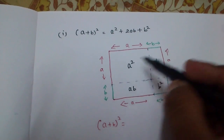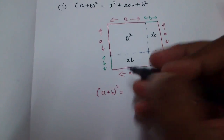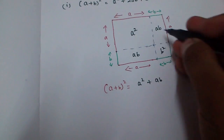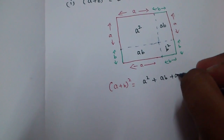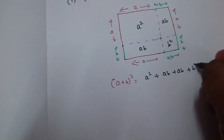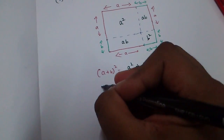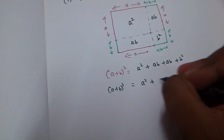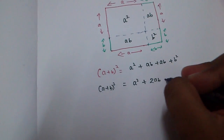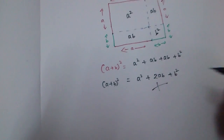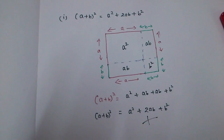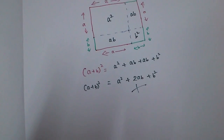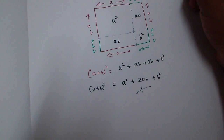(a + b)² is the sum of all four parts: a² + aB + aB + b², which can be written as a² + 2ab + b². This is how the identity is proved. Similarly, we have a proof for (a − b)².